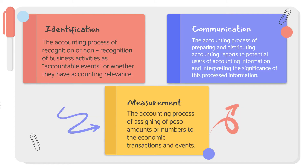The first step is identification. Identification is the accounting process of recognition or non-recognition of business activities as accountable events — that is, whether they have accounting relevance. In businesses, not all events or transactions that happen have accounting relevance. Since accounting provides quantitative information primarily financial in nature, not all events or transactions carry that quality.